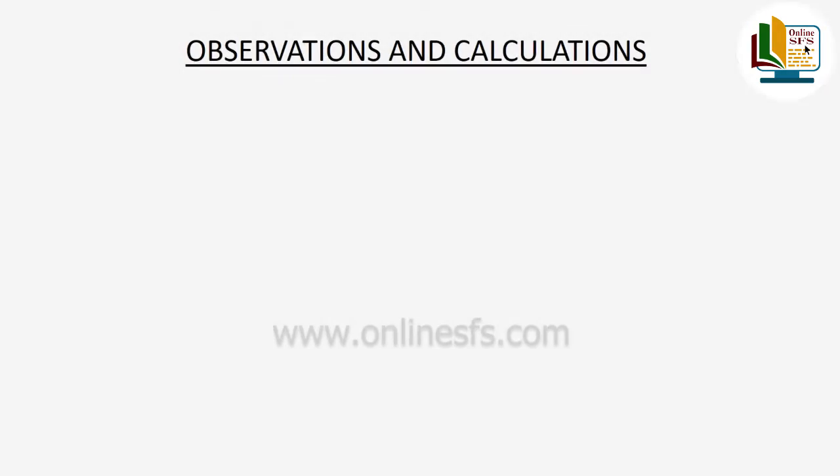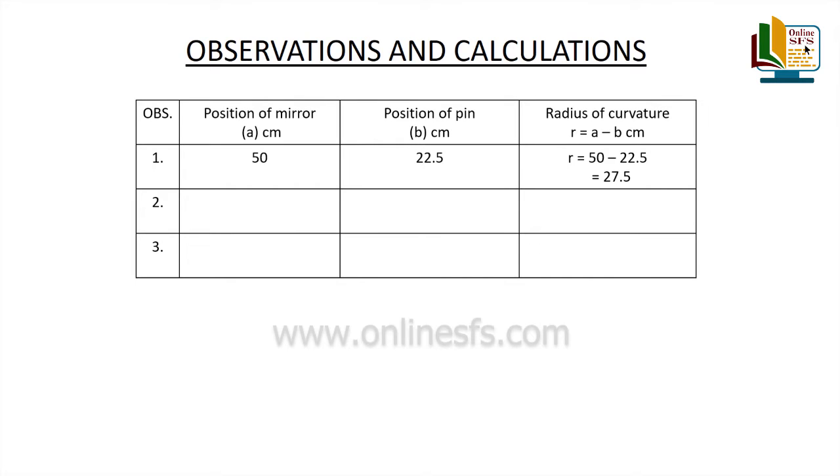Observation table mein first set of readings record karenge and radius of curvature r find out karenge. Position of mirror a equals to 50 cm. Position of pin b equals to 22.5 cm. Radius of curvature r1 equals a minus b which is found to be equal to 27.5 cm.